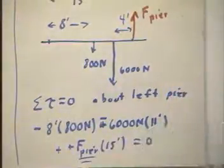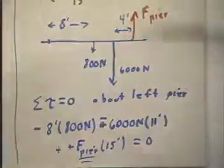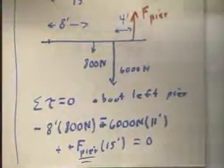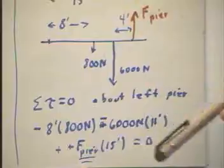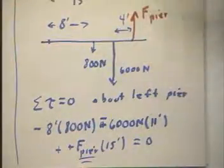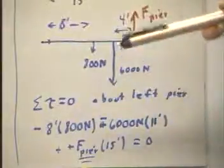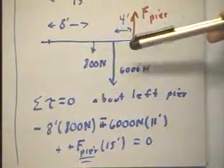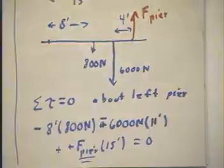That's an easy equation to solve. We can solve it and get the force of the pier. We could then apply the condition of vertical equilibrium to find the force of this pier. Alternatively, we could do torques about this pier to find the force exerted by this pier. We should get the same thing in both cases.